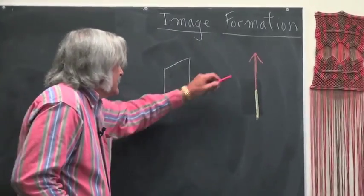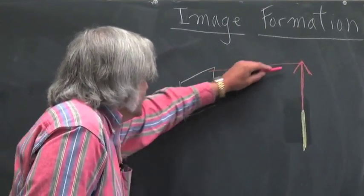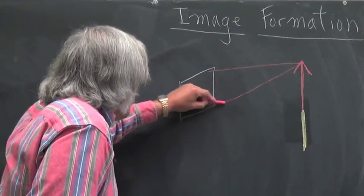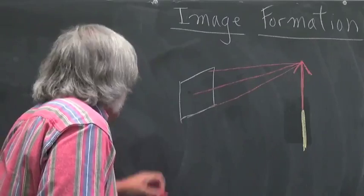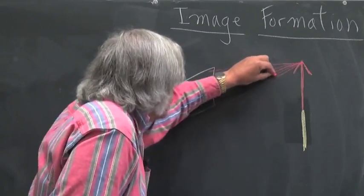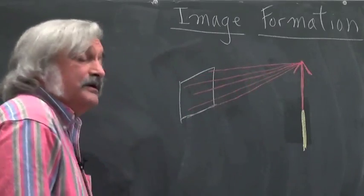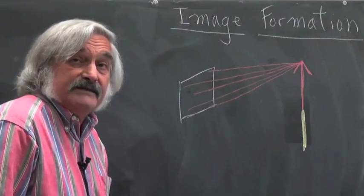Well, the reason is very clear. The light from the tip of the arrow goes here. Some of the light from the tip of the arrow goes here. Some of the light from the tip of the arrow goes there. And in fact, light from the arrow tip will spread out completely over the entire piece of film.